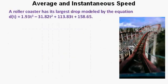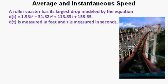Here's a problem. A roller coaster has its largest drop modeled by the equation D(t) = 1.93t³ - 31.82t² + 113.83t + 158.65. D(t) is measured in feet and t is measured in seconds.